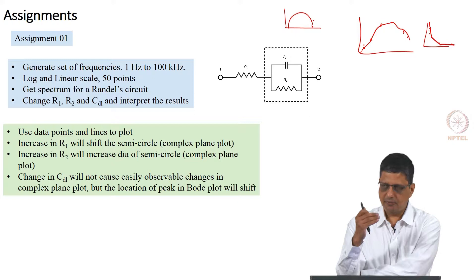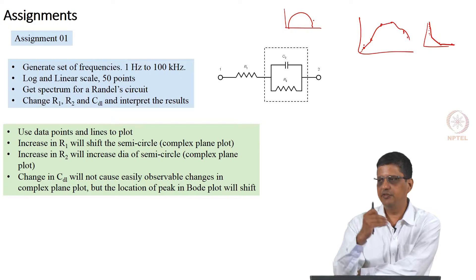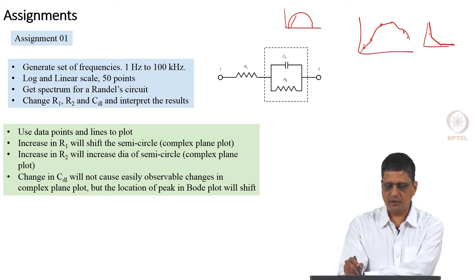If R2 is changing, instead of in R1 case, it is going to shift like this but semicircle will not change. If R2 is changing, let us say it increases but R1 remains the same, semicircle diameter will increase.